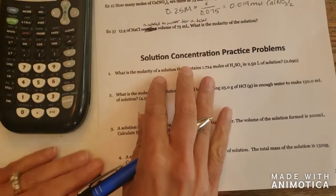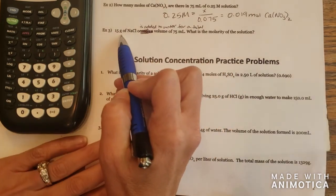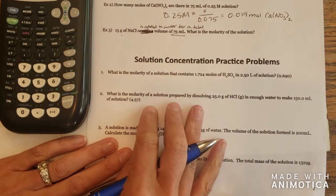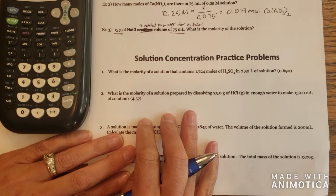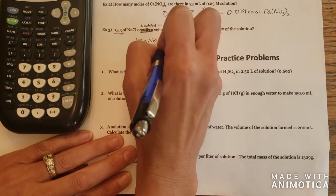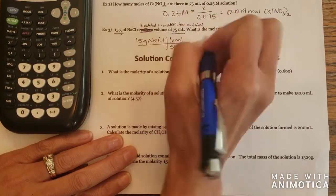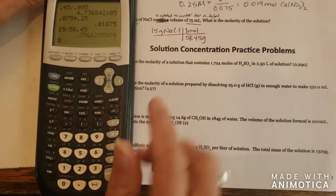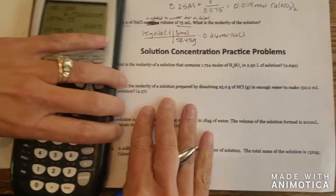So the next one, I had to change the wording because it was not completely worded in the problem. So you have 15 grams of sodium chloride that's added to water for a total volume of 75 milliliters. So this is the total volume of our solution. We want to find the molarity of it. Now you'll notice that the amount of sodium chloride is given in grams. So the first thing we have to do is convert the grams into moles. So 15 grams of sodium chloride. We're going to say one mole of sodium chloride is 58.45 grams. That's the molar mass off of the periodic table. So 15 divided by 58.45 tells us we have 0.26 moles of sodium chloride that is in the solution.